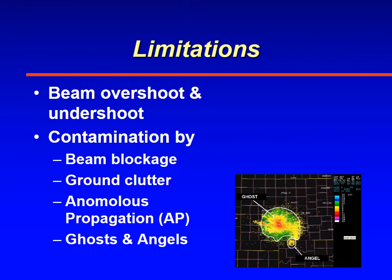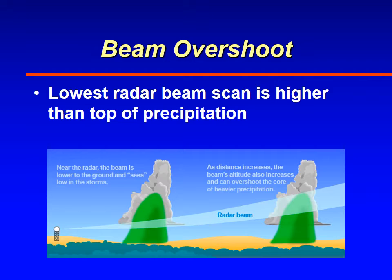Now the limitations for a ground-based weather radar — there are a number of them. There's contamination, and also overshoot and undershoot. Beam overshoot means the radar beam is going over the top of the precipitation. This is typically on the lowest radar scan, the base reflectivity, where you can't see anything because you're overshooting the top.